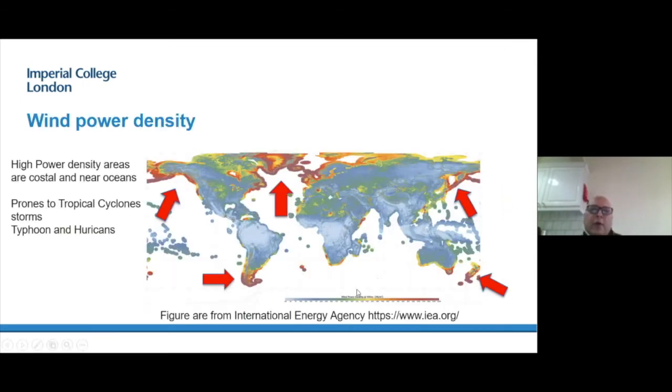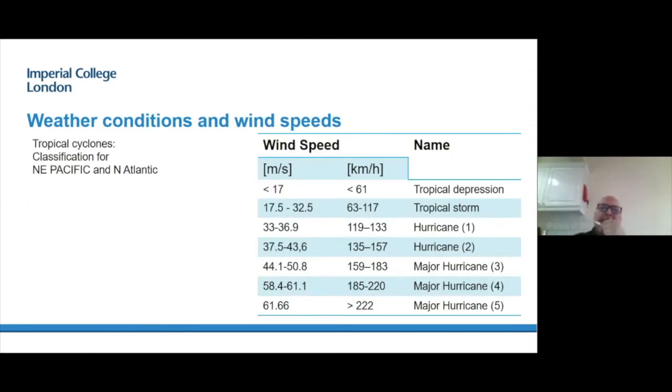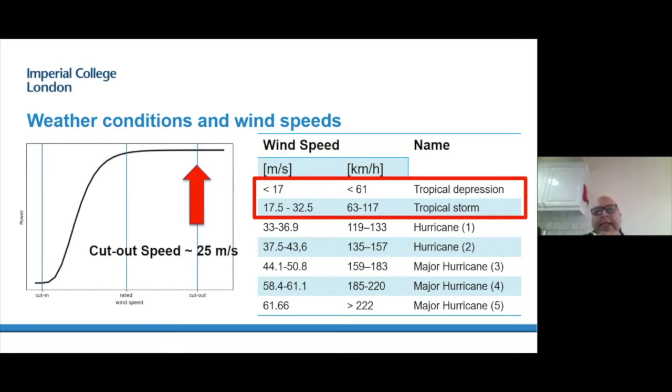Looking at the global map, because the power is proportional to the cubic of the velocity, it suggests that we have to build these wind farms in locations of high wind velocity, which are basically coastal areas. They are prone to experience high winds, tropical cyclones, storms, typhoons, hurricanes. These are different names but basically the same thing: high velocity wind with changing direction and high amplitude gusts. This is the classification for North East Pacific and North Atlantic.